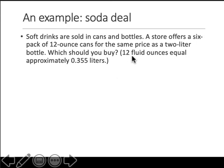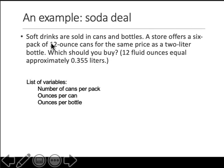Soft drinks are sold in cans and bottles. A store offers a six-pack of 12-ounce cans for the same price as a two-liter bottle — what should you buy? You're told that 12 fluid ounces equals a certain number of liters. So the variables you need are cans per pack, ounces per can, and ounces per bottle. That's the only way you can compare them.